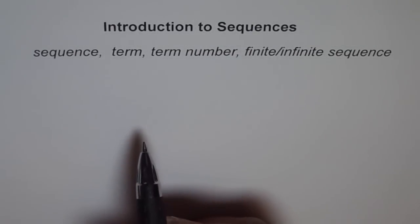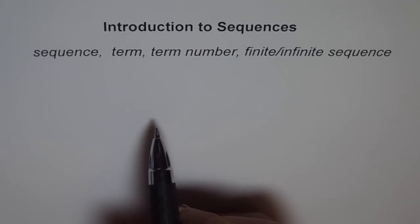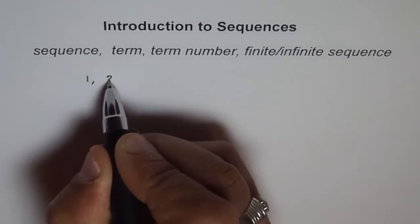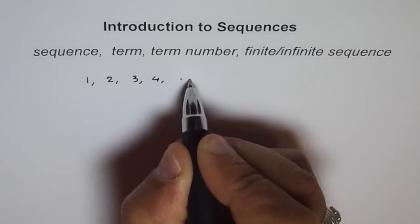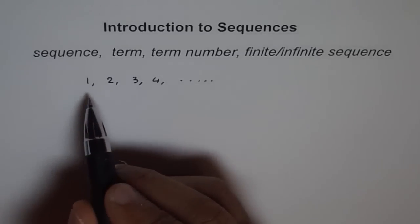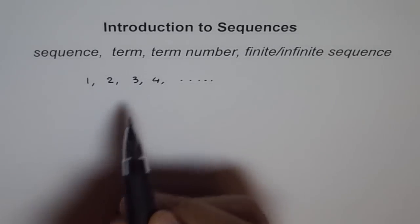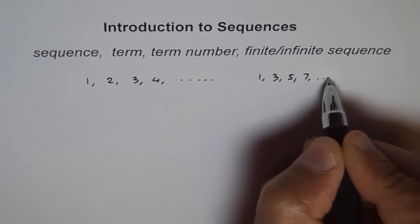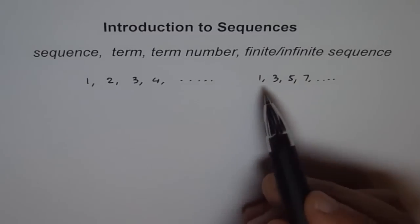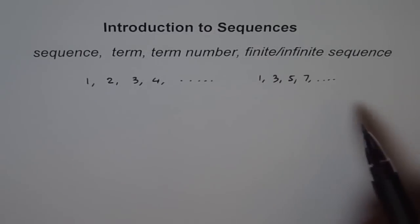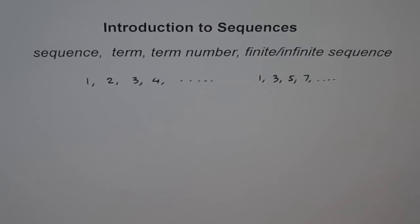Introduction to sequences. We have been dealing with numbers and number patterns for a long time. In junior classes we had pattern numbers like 1, 2, 3, 4 and so on. This is just a pattern — a sequence of numbers one after another. We start with 1 and add 1 each time. We can also have patterns like 1, 3, 5, 7 and so on — skipping one count each time, or a set of odd numbers starting with 1, where we add 2 each time.